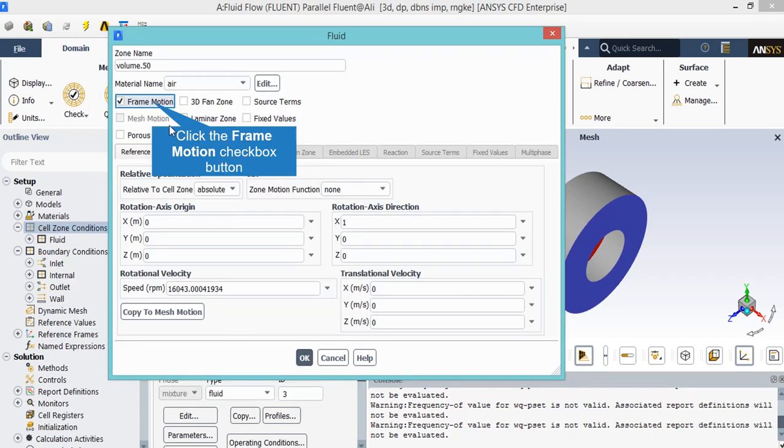We are able to define this rotating motion for the geometry by clicking on the frame motion. After clicking on this button, you will see that the dialog box will expand further more.